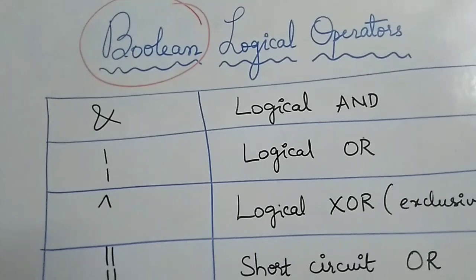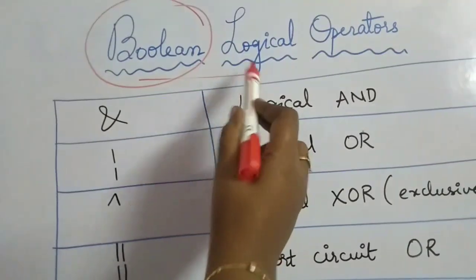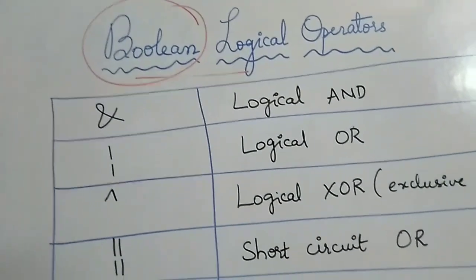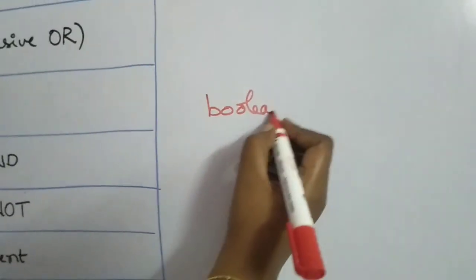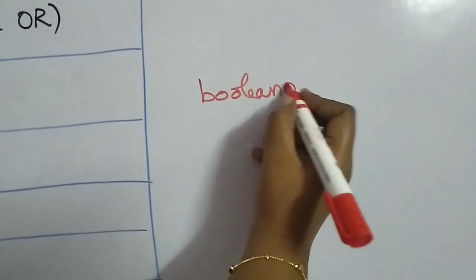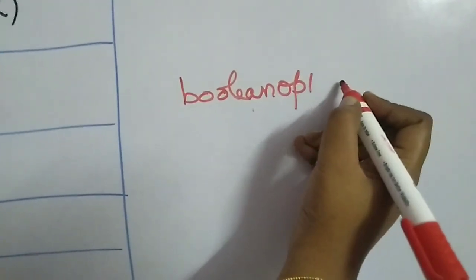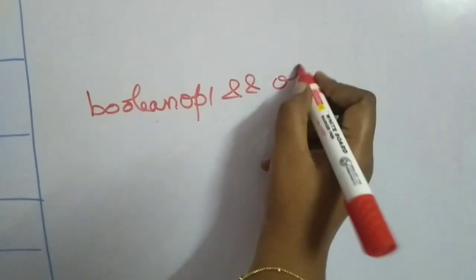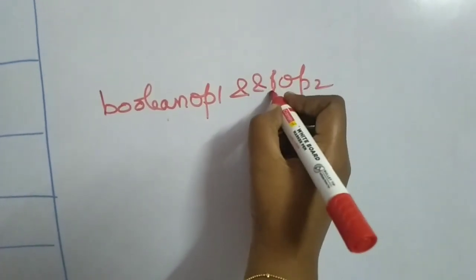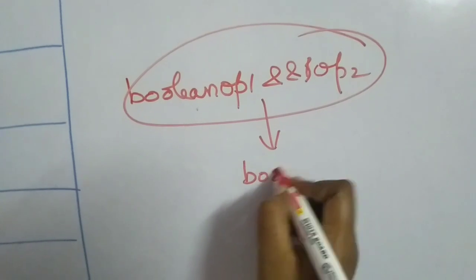Please take care that we will be applying Boolean logical operators on boolean operands. We will be taking two boolean operands — boolean operand 1 and another boolean operand — and applying some operation on them. The outcome of this will again be a boolean value.